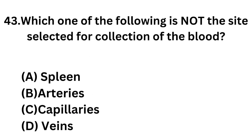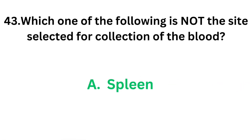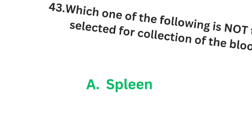Question number 43: Which one of the following is not a site selected for blood collection? Option A: Spleen. Option B: Arteries. Option C: Capillaries. Option D: Veins. The correct answer is option A, spleen. Spleen is not a site for blood collection. We can collect blood from arteries, veins, and capillaries.